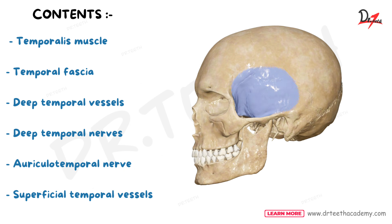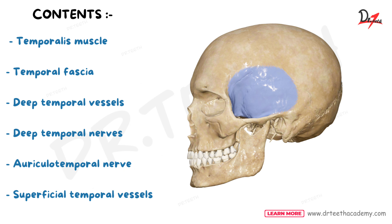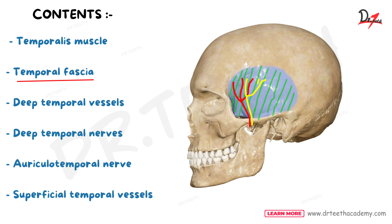What are the contents of the temporal fossa? In the temporal fossa, we have the temporalis muscle, temporal fascia, deep temporal vessels, deep temporal nerves, auriculotemporal nerve, and superficial temporal vessels.